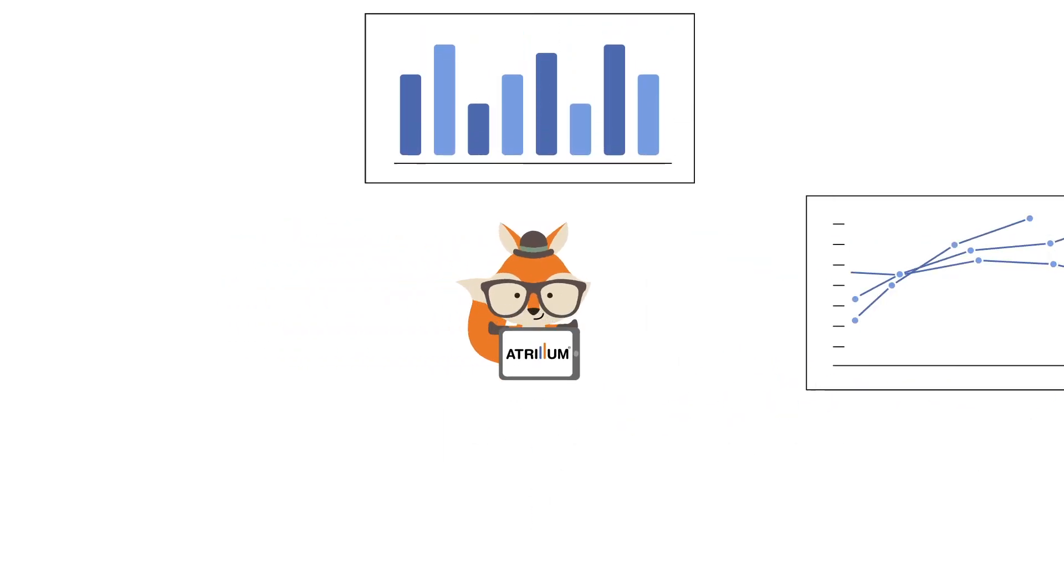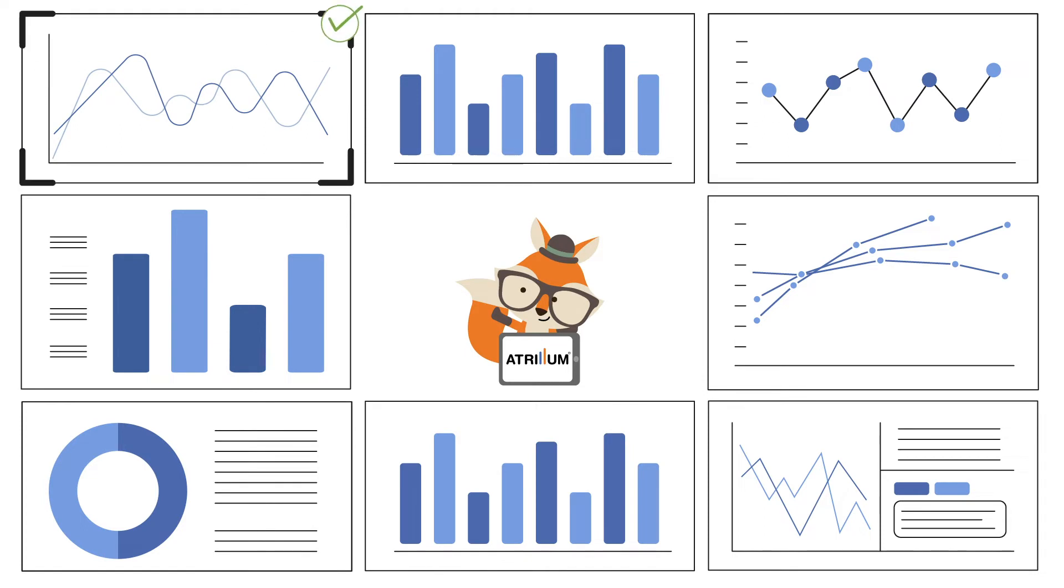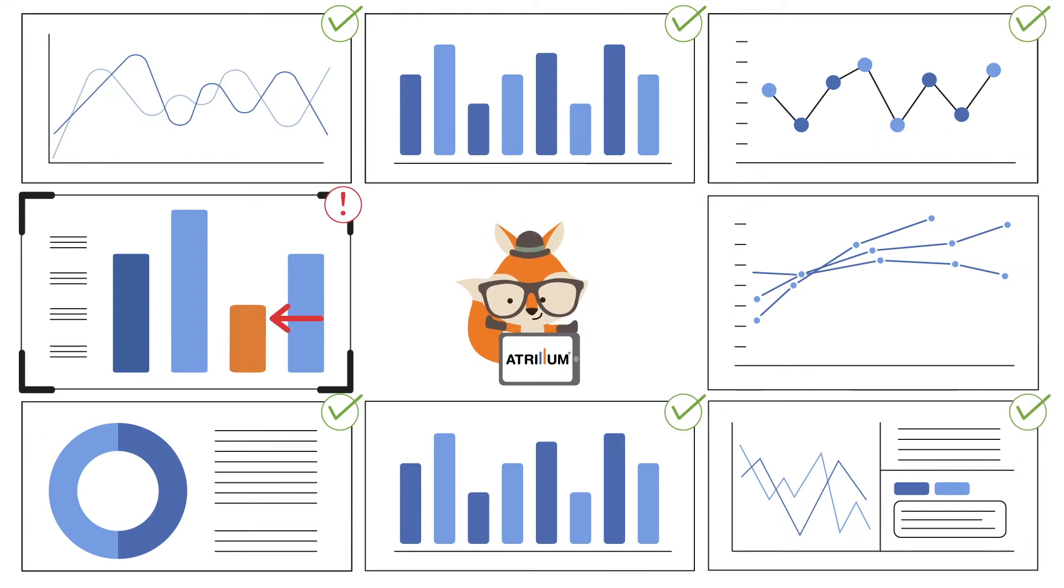Atrium proactively monitors dozens of metrics for each AE and SDR, constantly looking for potential issues through statistical analysis. It's like having a squad of super smart sales ops analysts watching every metric for every rep and letting you know when something looks off.